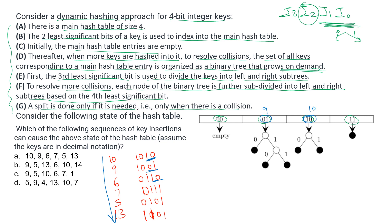To resolve the collision between 10 and 6, we check the i2 bit. For 10, i2 is 0, and for 6, i2 is 1. So the tree at index 10 grows with a left branch (zero side) representing 10 and a right branch (one side) representing 6. Next, 7 is inserted.